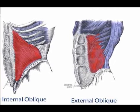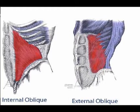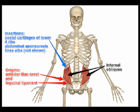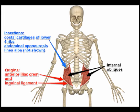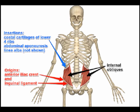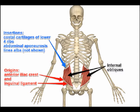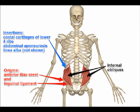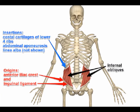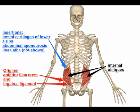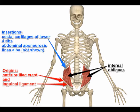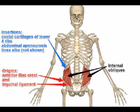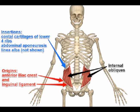Their actions are to abduct the trunk, to rotate the trunk, to support the abdominal wall, and to aid in forced respiration. They also help to increase intra-abdominal pressure.